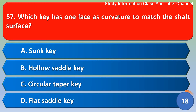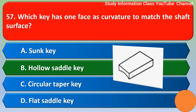Next question: Which key has one face with curvature to match the shaft surface? Option A: sunk key. Option B: olive saddle key. Option C: circular taper key. Option D: flat saddle key. The correct answer is Option B: olive saddle key.